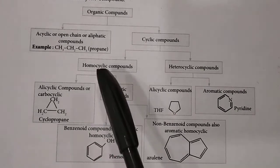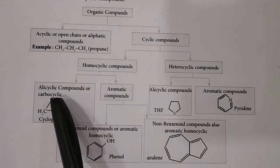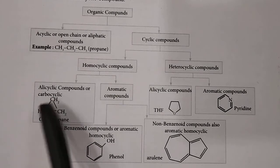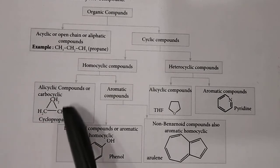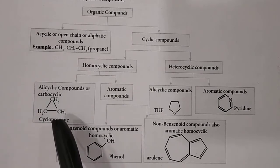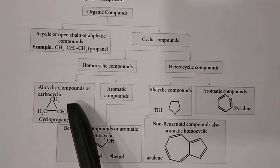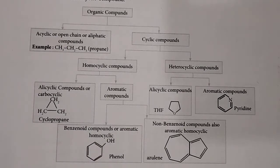Homocyclic compounds are subdivided into alicyclic compounds. For example, CH2-CH2-CH2 forms cyclopropane — a three-carbon chain in cyclic structure, which is why it is called cyclopropane.